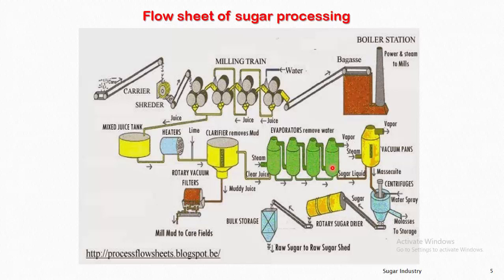The clear juice enters the concentration process using a multi-effect evaporator — effects one, two, three, and four — where the juice is concentrated up to 65% semi-solid. This concentrated juice is further sent to a single-effect evaporator for the crystallization process. The massecuite then enters the centrifuge, where the mother liquid — molasses — goes to storage, and the final sugar crystals are dried in a rotary sugar dryer, then screened by size — small, medium, and large — and finally sent to bulk storage.